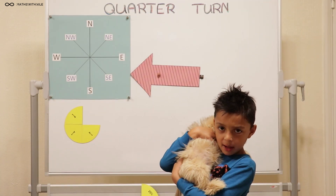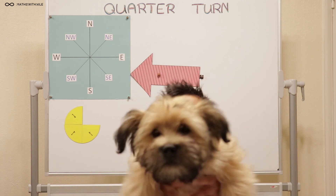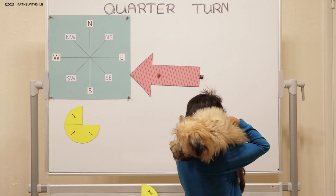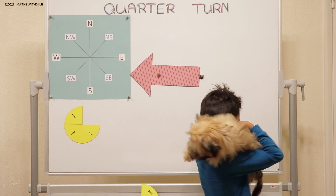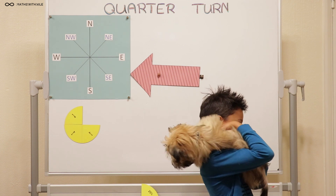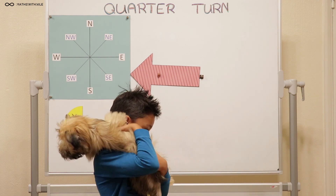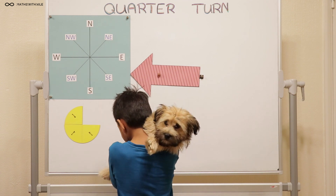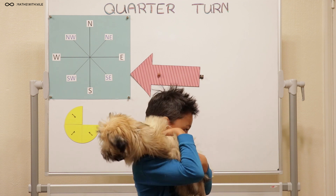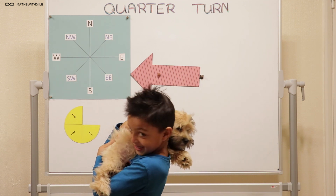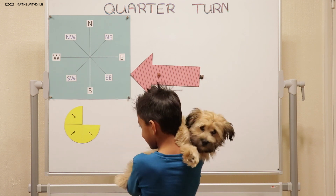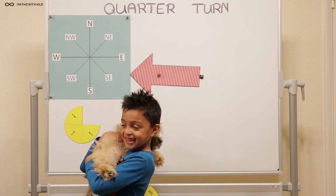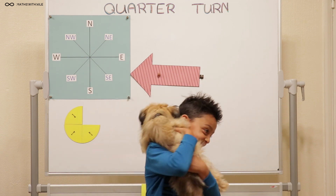Welcome to the quarter turn game. I'm Frankie, my dog will be helping. Okay, so face the wall — let's see how many you can get correct, this is going to be fast. Quarter turn clockwise. Face straight, go in the middle of the board. That was the warm up — are we ready? Quarter turn anti-clockwise. Quarter turn clockwise. Half turn anti-clockwise. Quarter turn clockwise. 90 degrees anti-clockwise. 180 degrees anti-clockwise. Quarter turn clockwise.